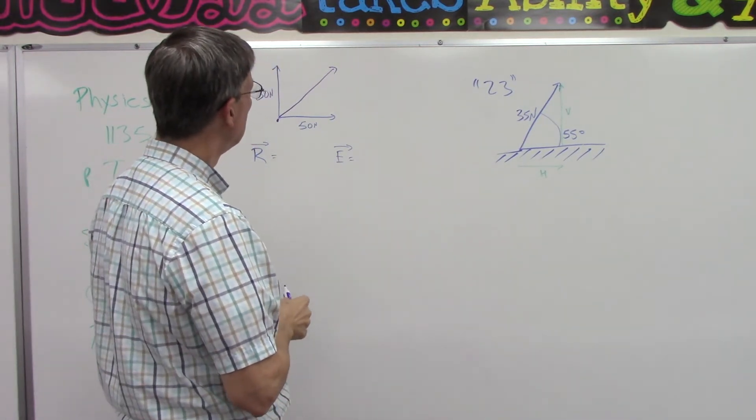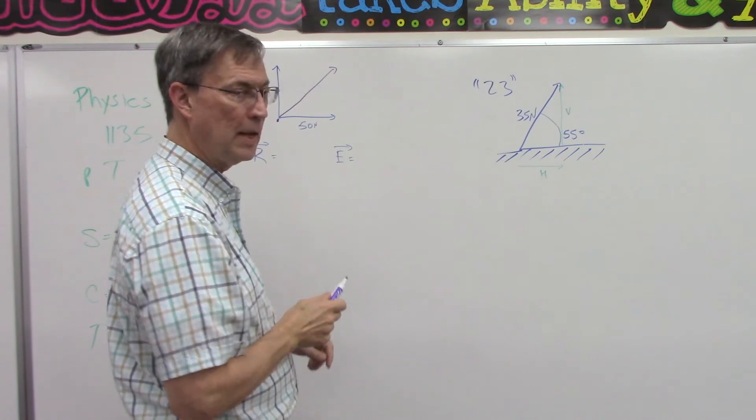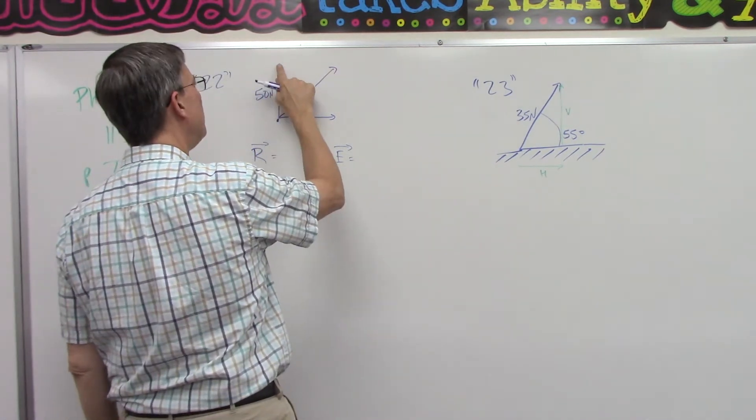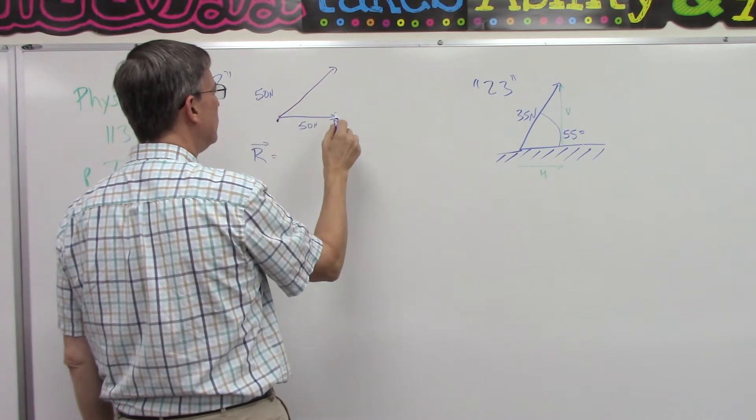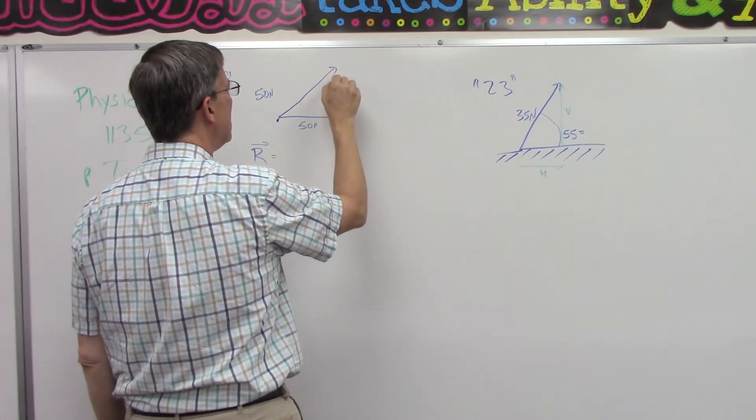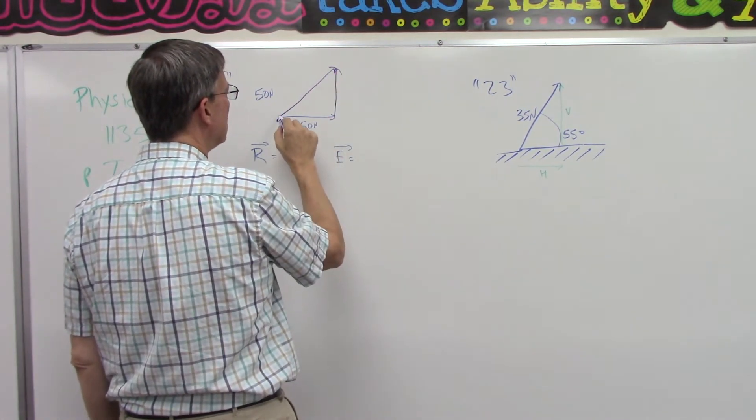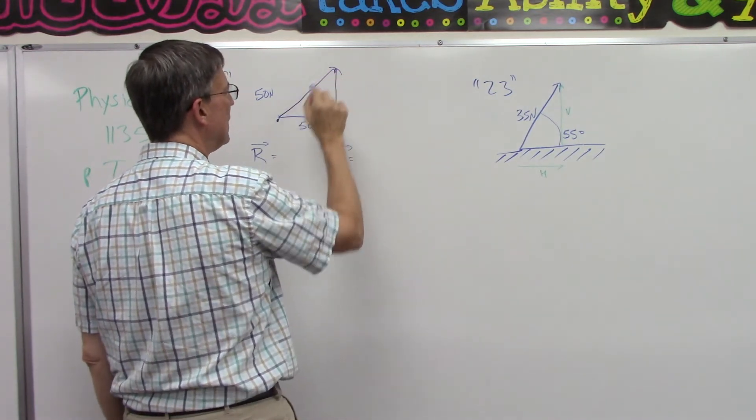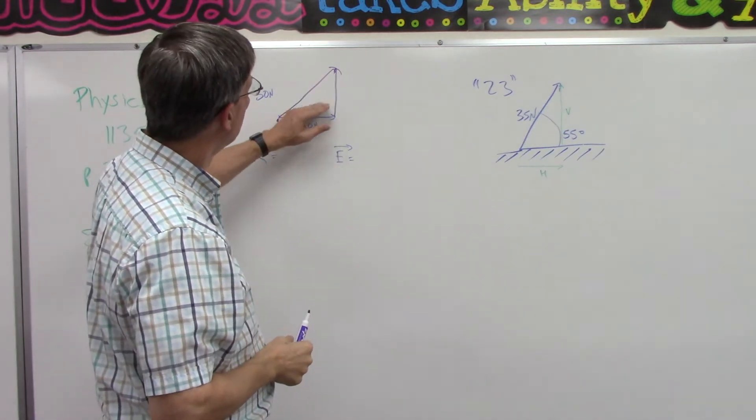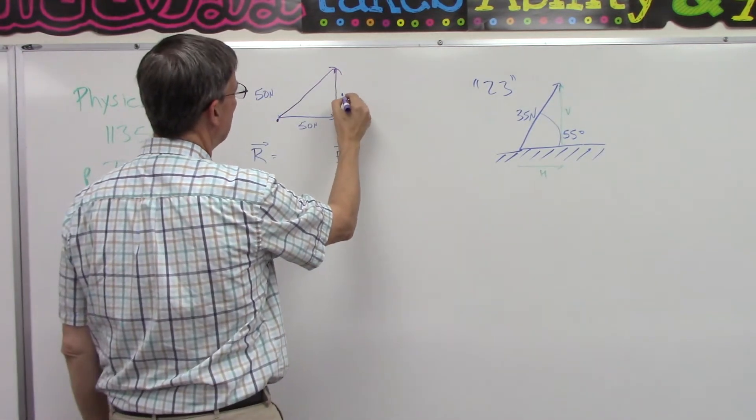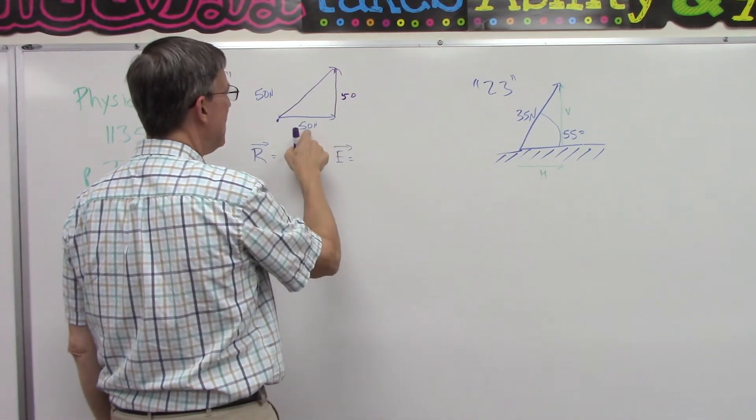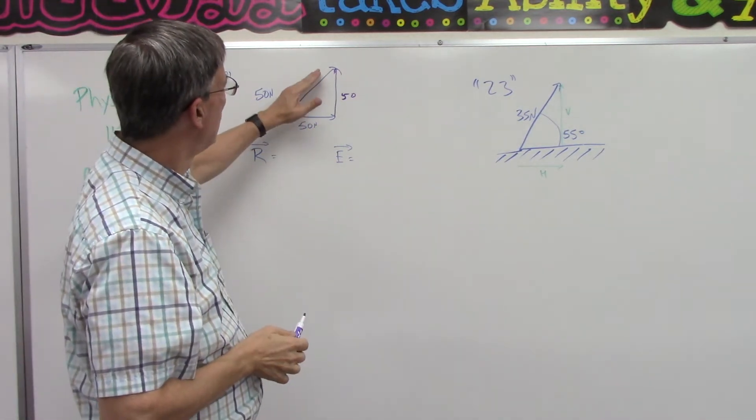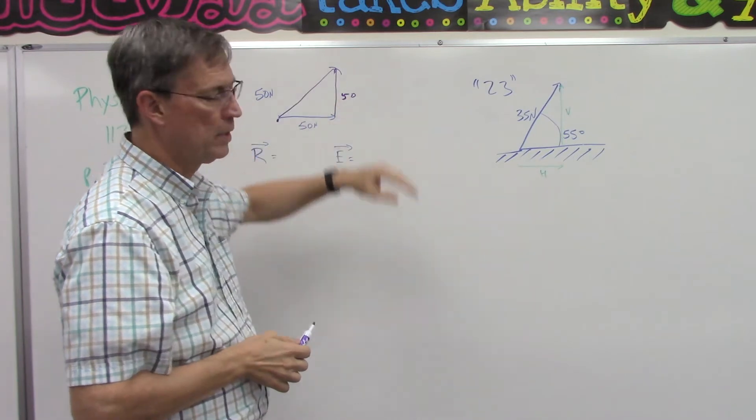So one way that we can do that is we can turn it into a rectangle and find that length. Or another way is we can pick up this vector and we can move it here to the end. And then we take the final resultant and it goes from the beginning and connects to this end point.